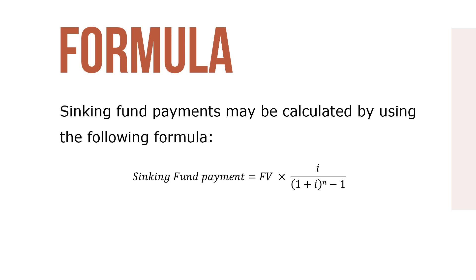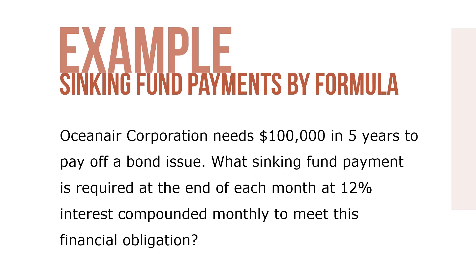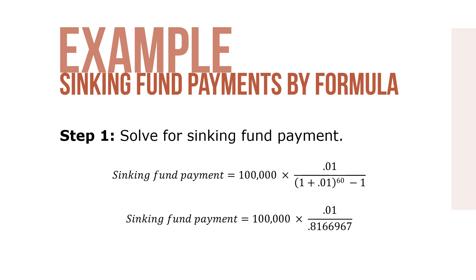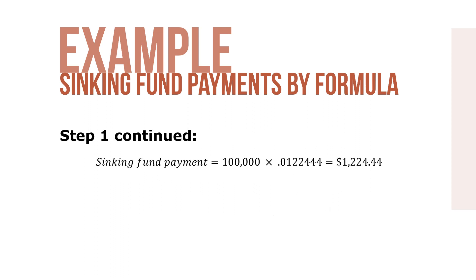Sinking fund payments may be calculated by using the following formula, where FV is the amount needed in the future, I is the interest rate per period (the nominal rate divided by periods per year), and N is the number of periods (years times periods per year). Here's an example. Ocean Air Corporation needs $100,000 in five years to pay off a bond issue. What sinking fund payment is required at the end of each month at 12% interest compounded monthly to meet its financial obligation? Our sinking fund payment is $100,000 times 0.0122444, which means our sinking fund payment is $1,224.44.